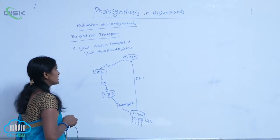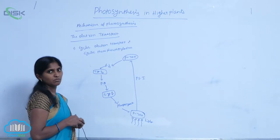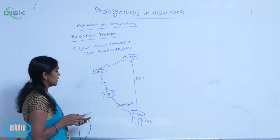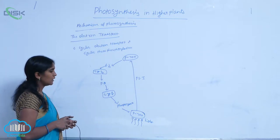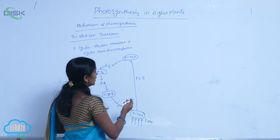Cyclic electron transport and cyclic photophosphorylation. In this process, only PS1 is involved.